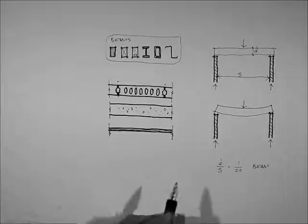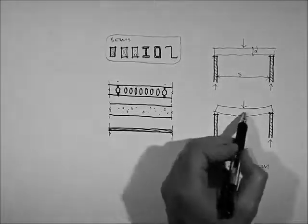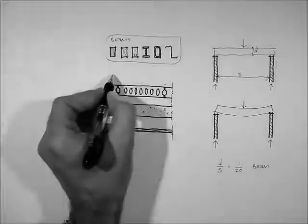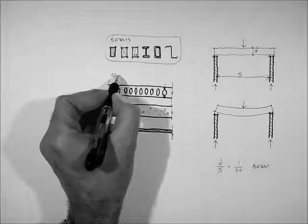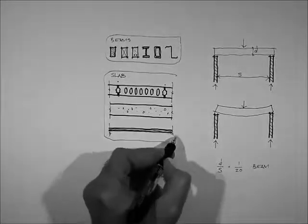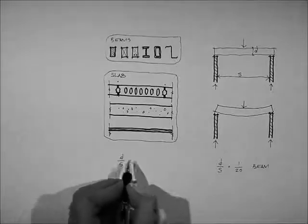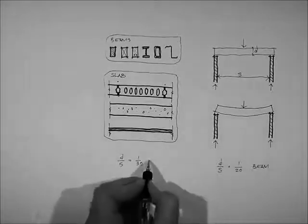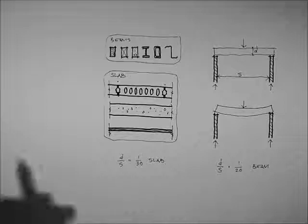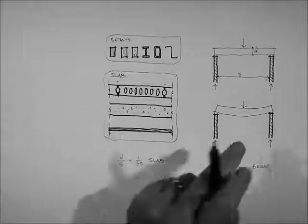So these slab type materials will look the same in section and they'll distort in the same fashion. But the span-depth ratio will be different. So these are all slabs. And for their depth they will span a little bit further. They'll span a 30th as opposed to a 20th for a beam.